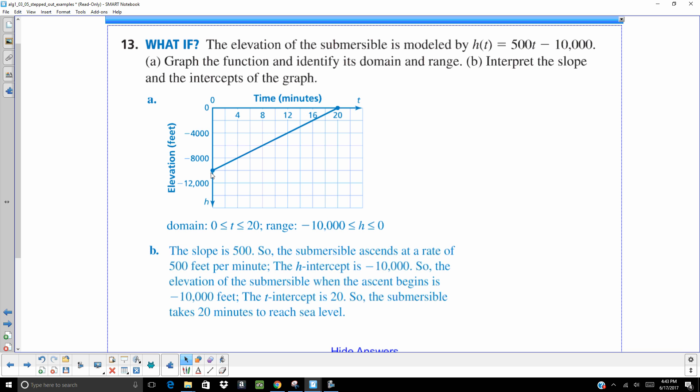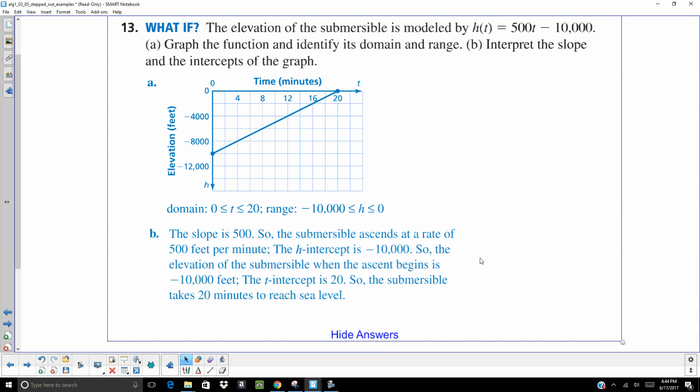So, this is my graph. Again, my lowest point is negative 10,000. So, that's as low as that submersible or the submarine goes. And it's going up to the sea level. So, that's 0. So, the range is from negative 10,000 to 0. That's my y values. And the range, it's going from 0 to 20. That is my domain. So, the slope is 500. That means that its lowest point was about 10,000. And it took 20 minutes to reach sea level.